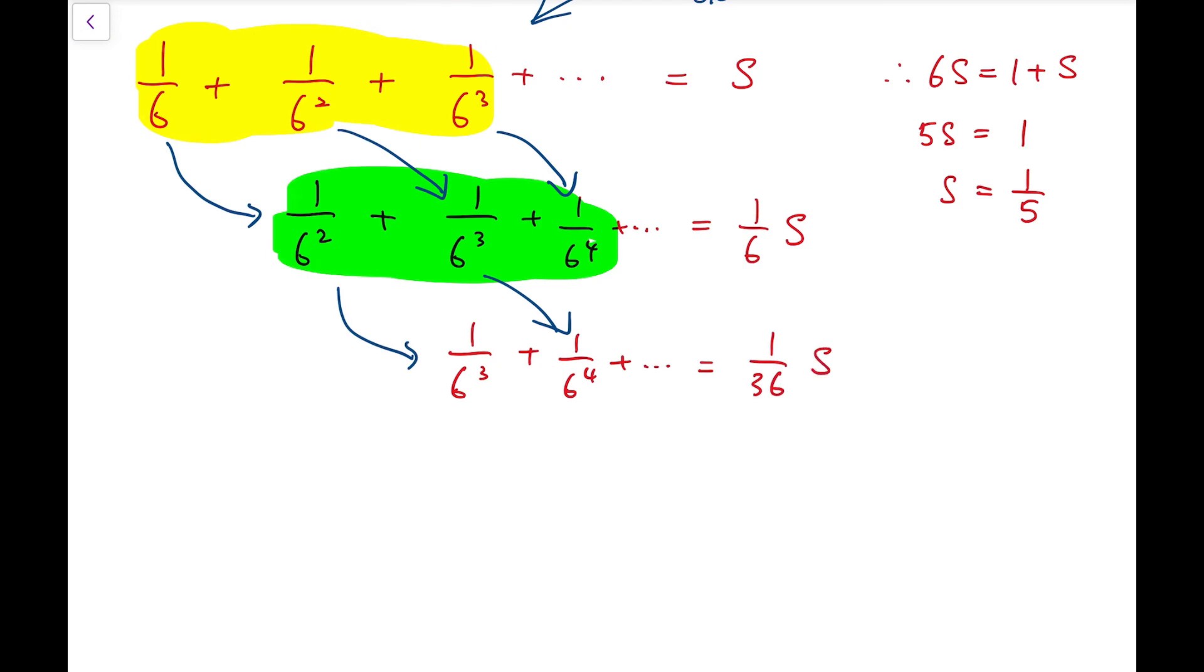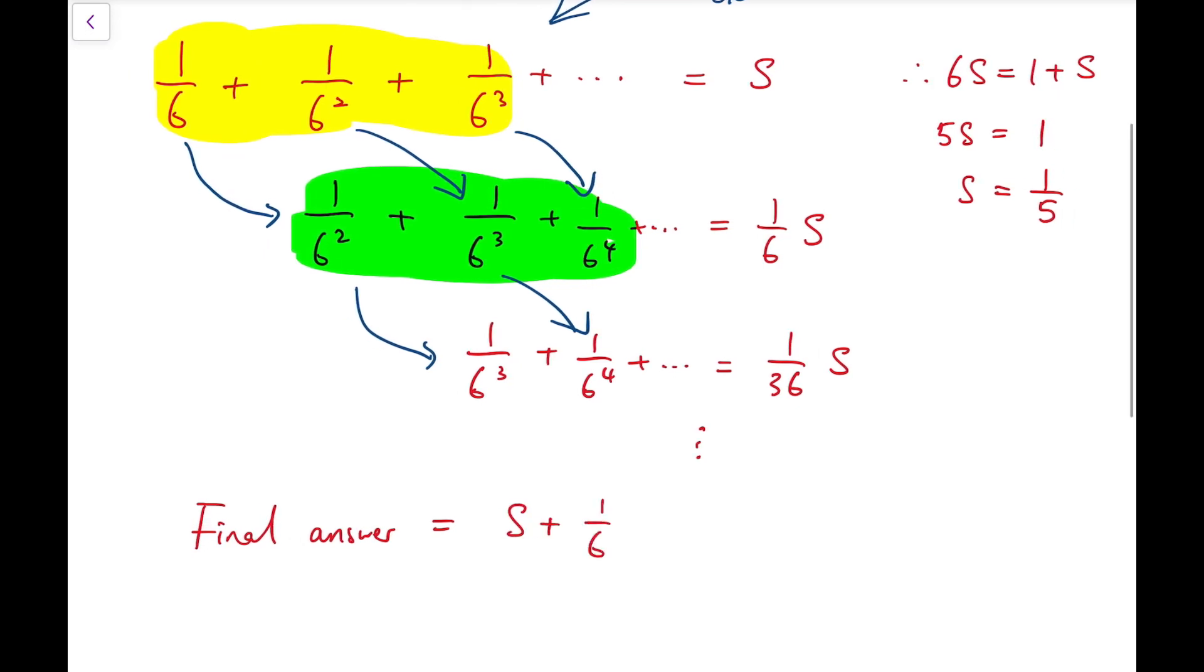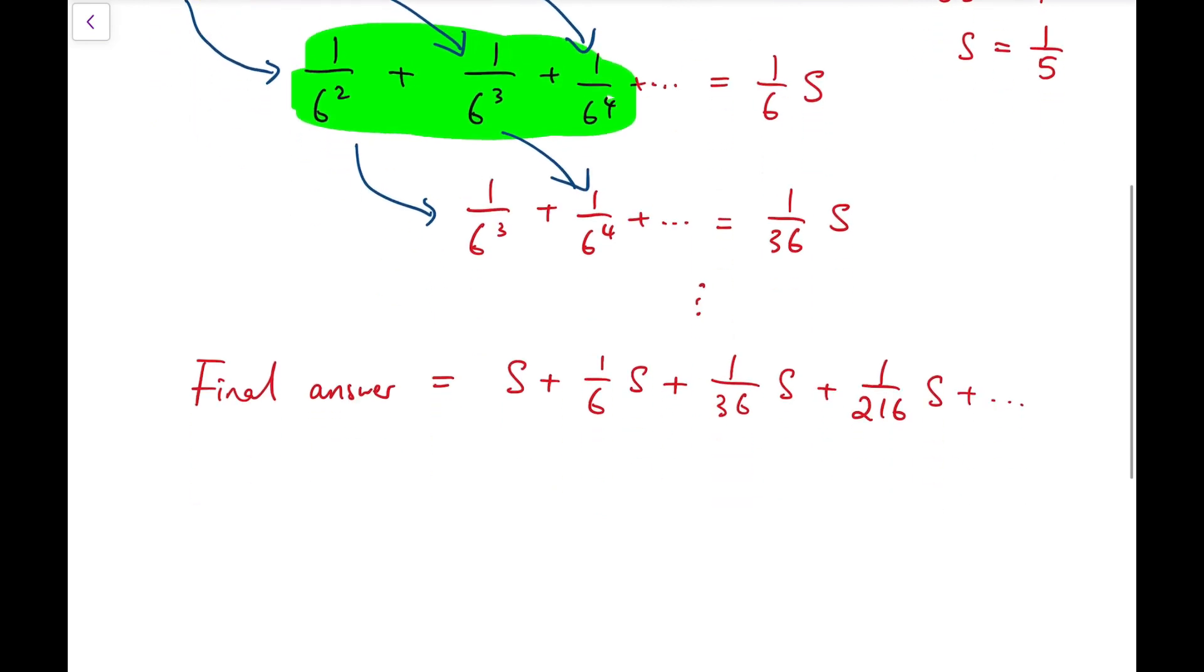Now, imagine if we keep doing this, then our final answer will be adding a lot of terms involving s. So there will be s plus 1 over 6s, plus 1 over 36s. And then you can imagine this again, power of 6, and so on. I have to take out a common factor, which is s. So it's 1 plus 1 over 6, and the pattern goes by 1 over 6 squared, 1 over 6 cubed, and so on, going to infinity again.